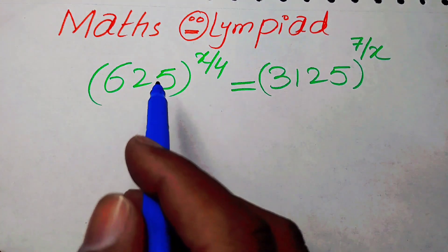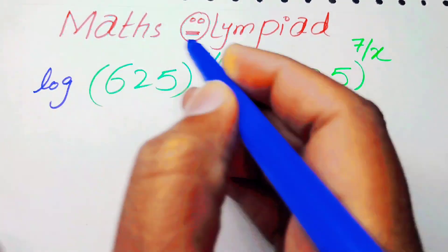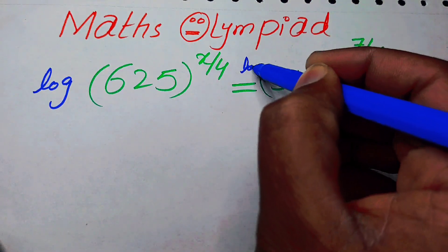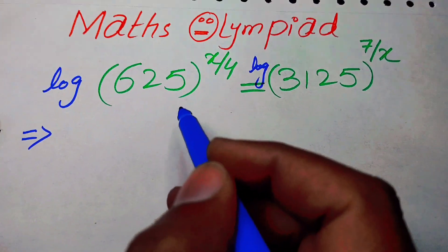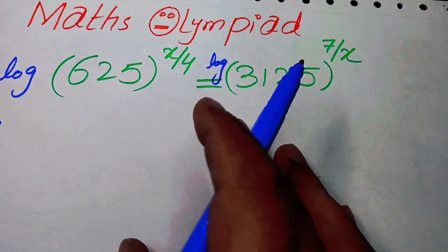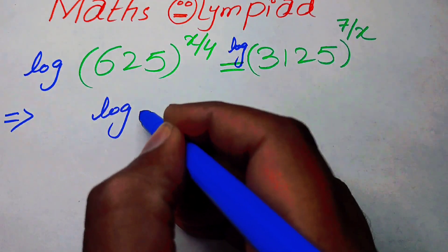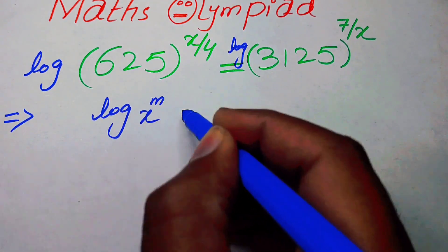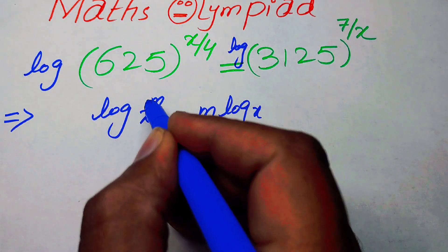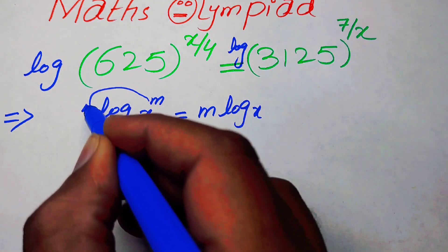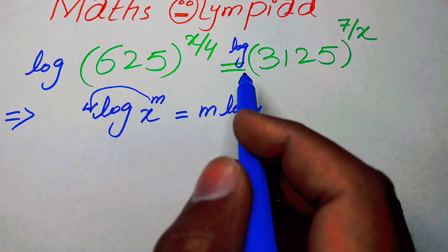The very first step is to take log on both sides. After that we apply the logarithm power property: log of x to the power of m becomes m times log x, so the power is written in front of the logarithmic term. We apply this property on both sides.